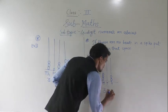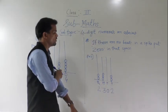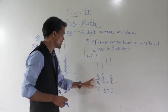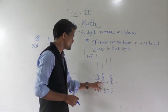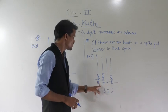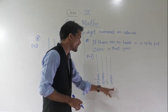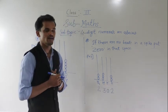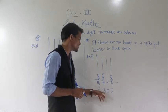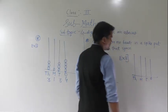At the ones place, two beads means two ones. So read this number as: two thousand, three hundred, and two.